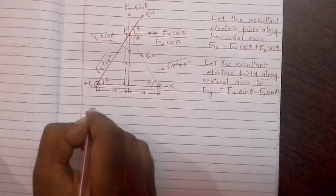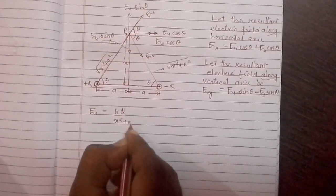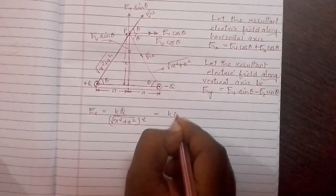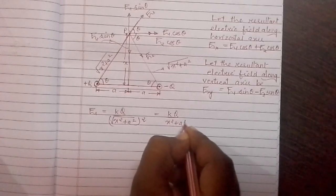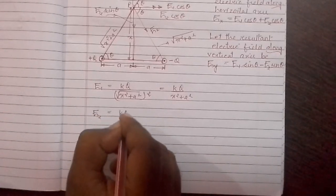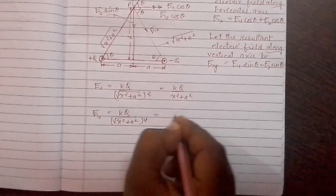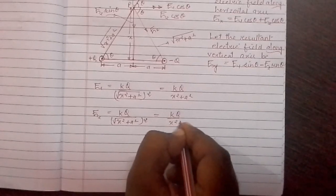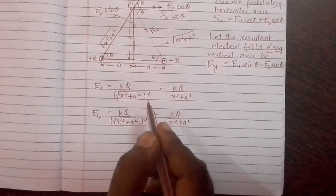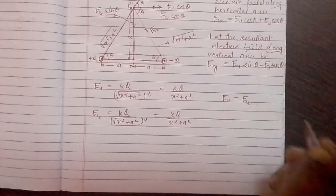If we calculate E1, we get E1 equal to kq divided by the square root of x squared plus a squared, whole squared, which simplifies to kq divided by x squared plus a squared. From this we can see that E1 is equal to E2 in magnitude.